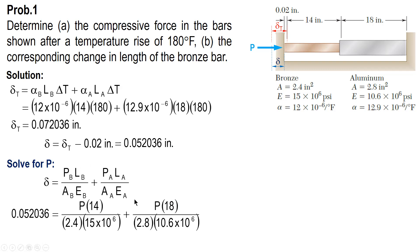We have the values. P unknown. Length of bronze, 14 inches. Area of bronze, 2.4. Modulus of elasticity, 15 times 10 raised to 6. And for aluminum, 18 inches length, 2.8 area. Modulus of elasticity, 10.6. And solving for P using your calculator, we have P equal to 52,278.68 pounds.